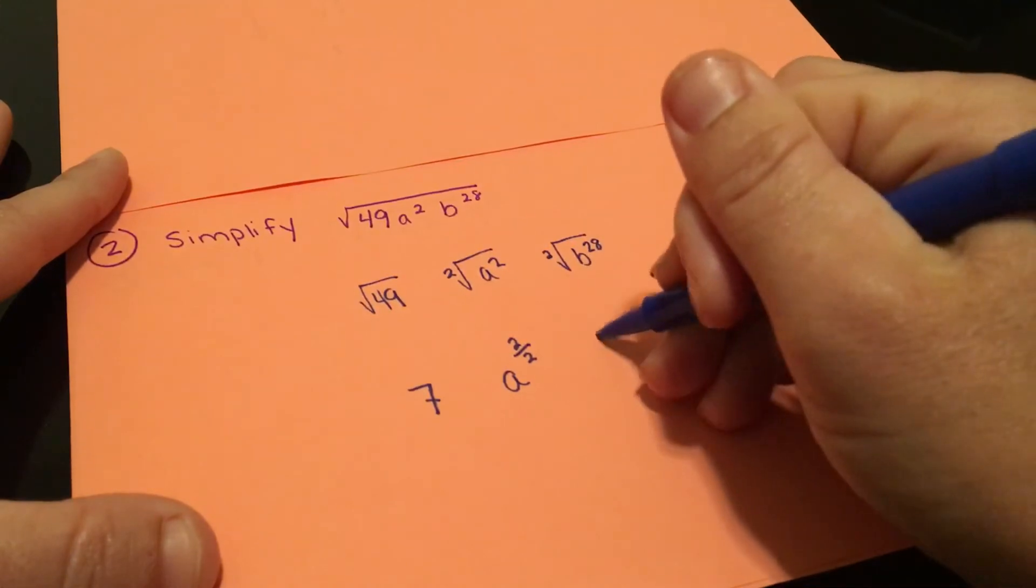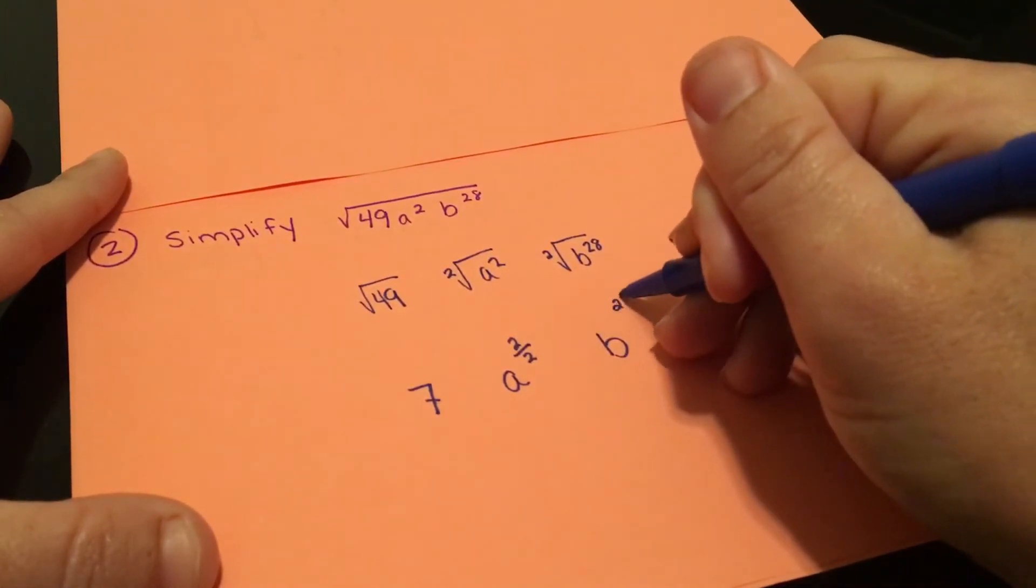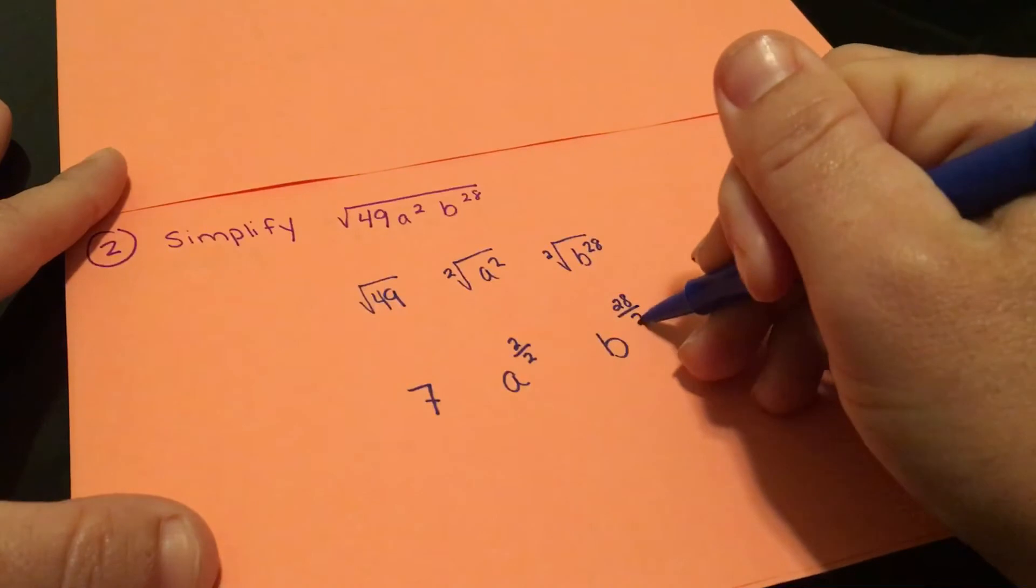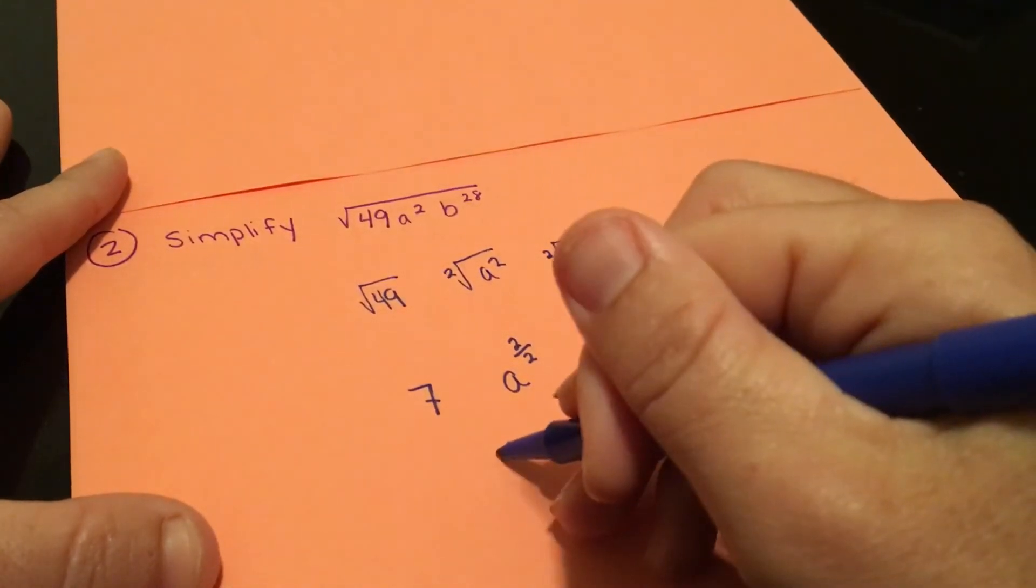And then we have b. Top would go on the inside. So 28 over 2. And then we would simplify each of these.